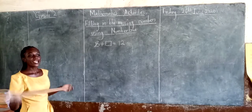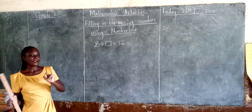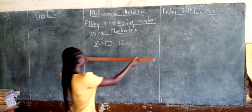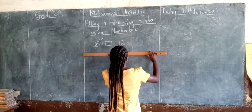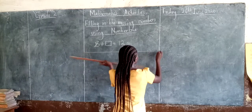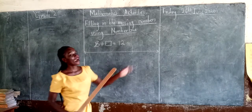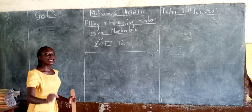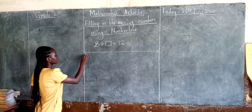We start by drawing the number line, and our number line looks like an arrow. So let's draw together. This is the number line. When we are numbering our number line, we start from number zero. So let's count.